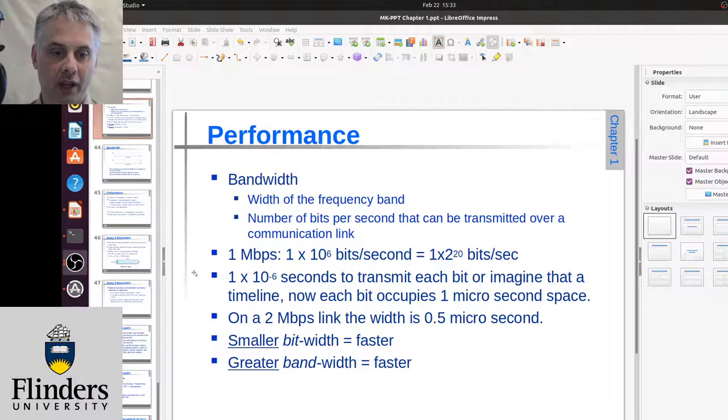If we go to a link that's twice as fast, so two megabits per second, then it will take half as long—half a microsecond. If we went to a 500 kilobit per second link, then it would take twice as long—it would take two microseconds to send each bit.